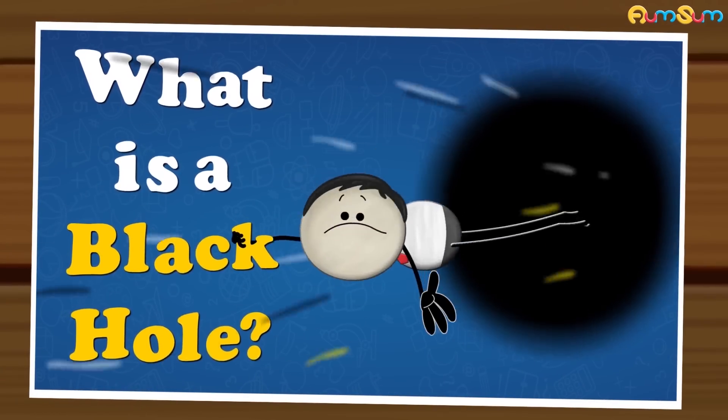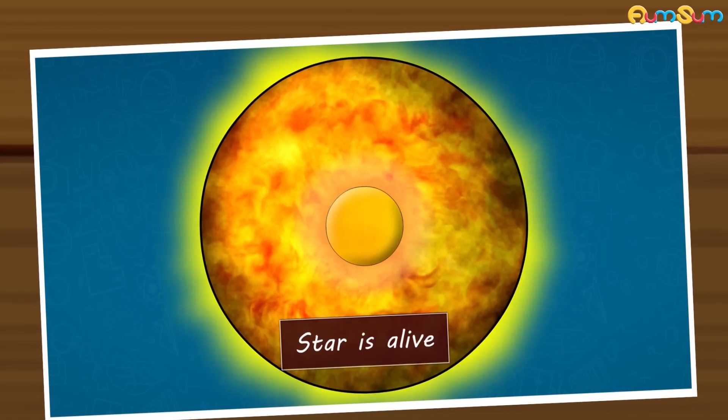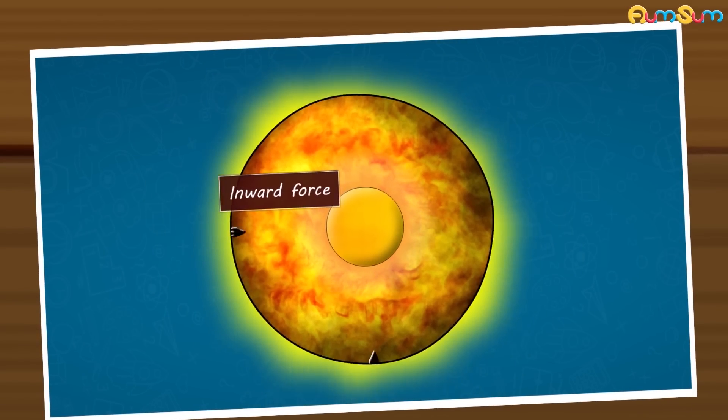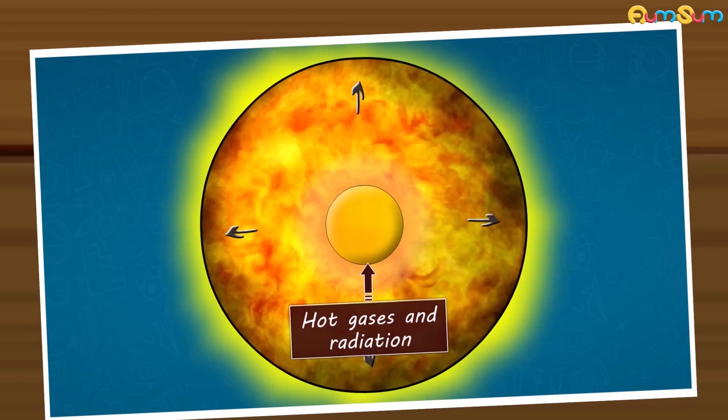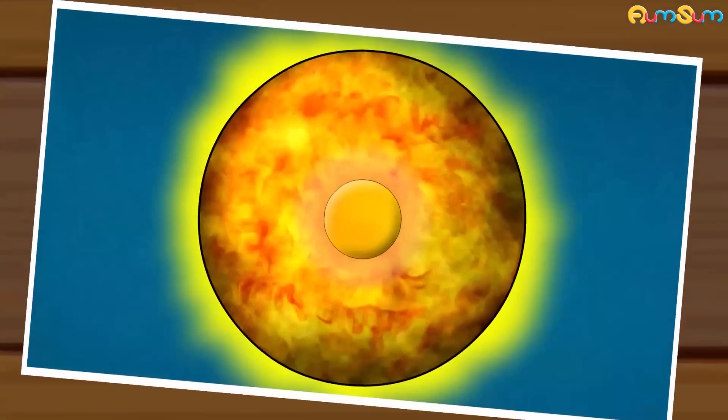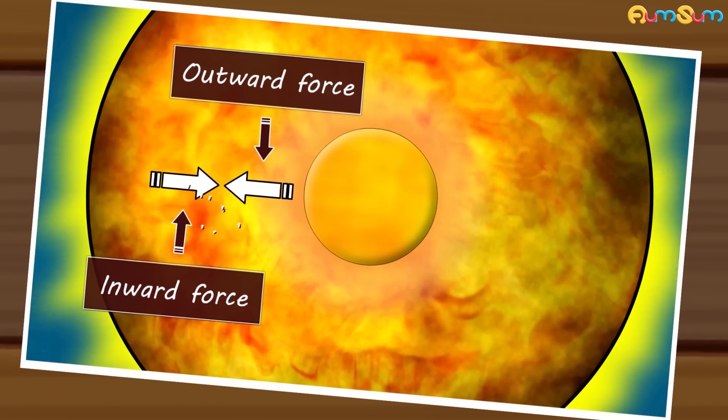What is a black hole? Usually, when a star is alive, the inward force of gravity is exactly balanced at each point by the outward force created by hot gases and radiation. These inward and outward forces maintain balance and hold the star together.